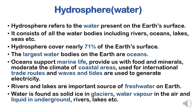Oceans are used for international trade routes — ocean routes are the most used and cheapest for importing and exporting products between countries. Waves and tides from the ocean are used to generate electricity. So the ocean — which we might think is just salty, useless water — gives us marine life, food, minerals, moderate temperatures, trade routes, and electricity.